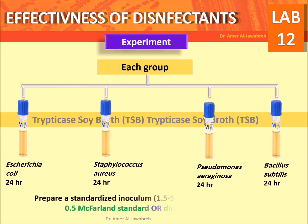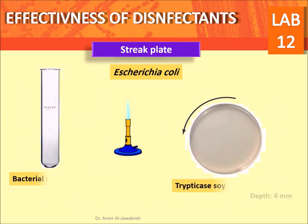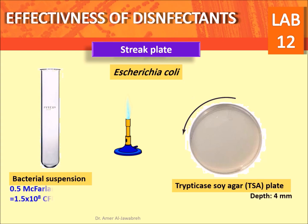Prepare a standardized inoculum of 1.5 to 5 times 10 to the power 8 CFU per ml in sterile saline. A 0.5 McFarland standard or direct microscopic count can be used. Using aseptic technique, immerse a sterile cotton swab in the bacterial suspension.